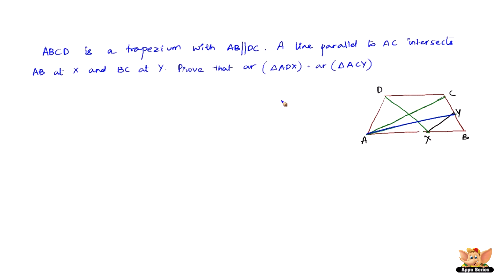Let us see how to go about that. We first join CX and DX, and also AY, which is already drawn. Now clearly, triangles ADX and ACX are on the same base AX and between the same parallels AB and DC. Therefore, area of triangle ADX equals area of triangle ACX.